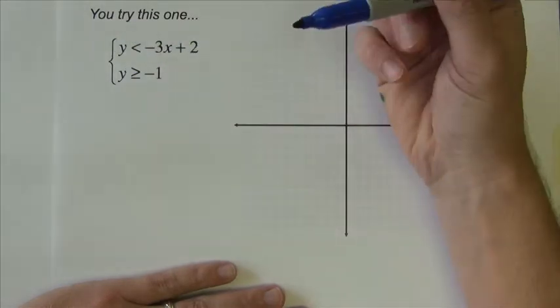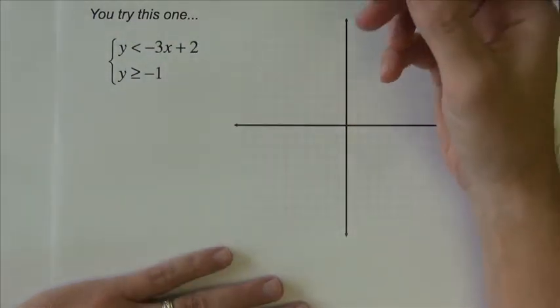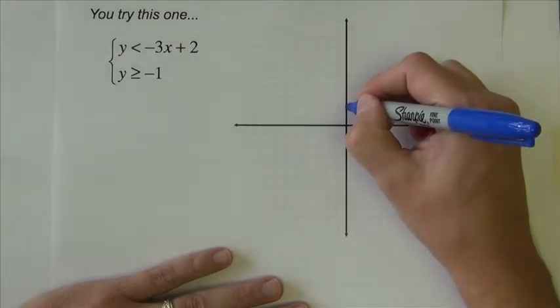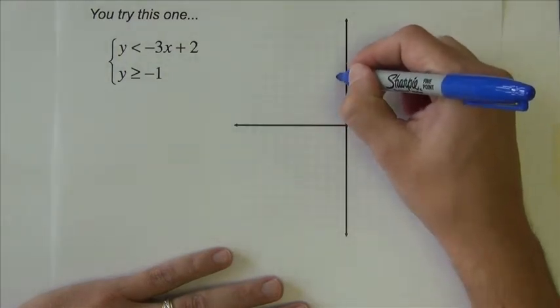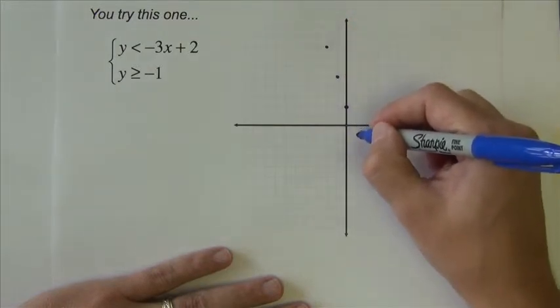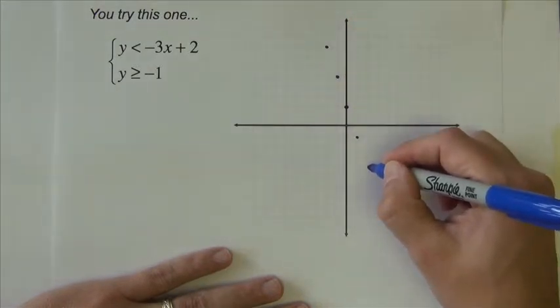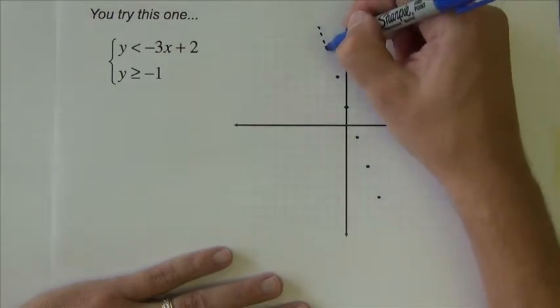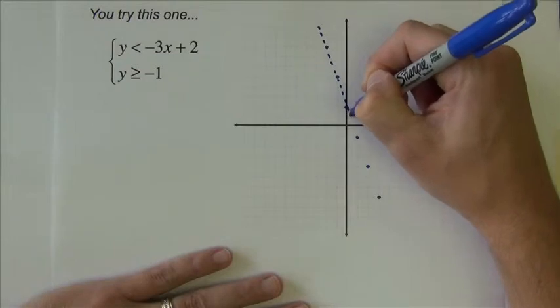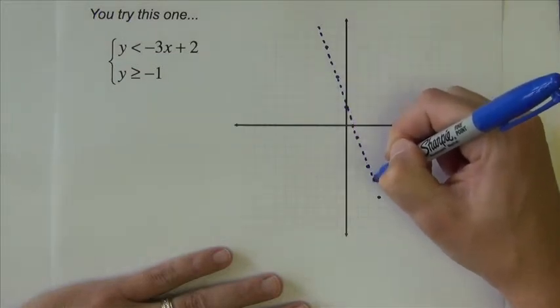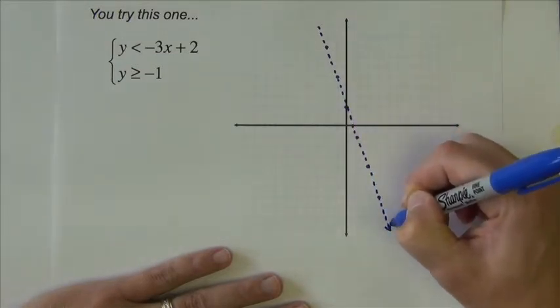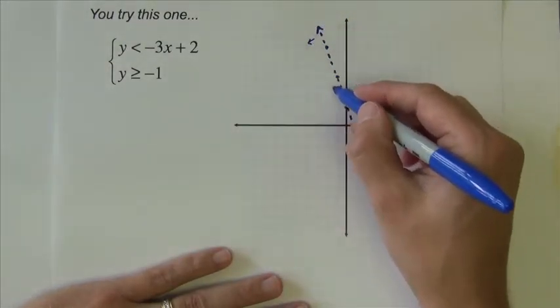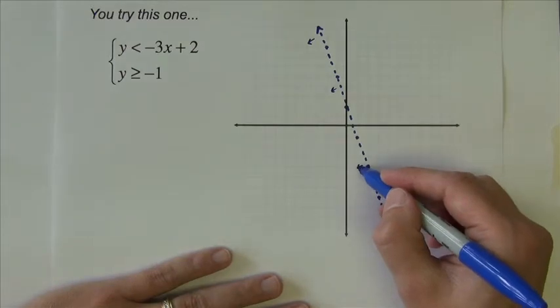In this one, both inequalities are already solved for y, so they're ready to graph. The first one, y less than negative 3x plus 2, starts at plus 2. Slope of negative 3, up 3 and left 1, or down 3 and right 1. This is going to be a dotted line because there is no equal to. I want less than, which is going to shade everything below the line, this way.